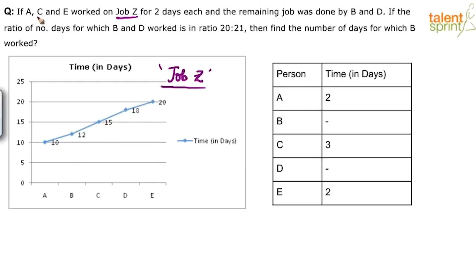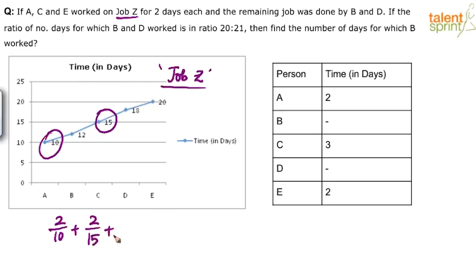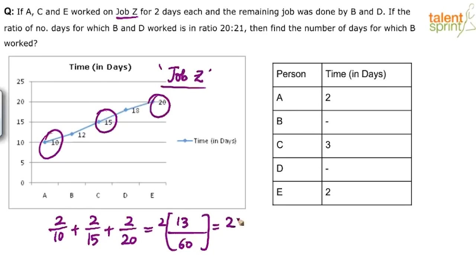A, C, and E each work for 2 days. A in 2 days finishes 2/10; C in 2 days finishes 2/15; E in 2 days finishes 2/20. The LCM of 10, 15, and 20 is 60. Taking 2 as common: 2 × (1/10 + 1/15 + 1/20) = 2 × (6 + 4 + 3)/60 = 2 × 13/60 = 26/60 is done by A, C, and E.